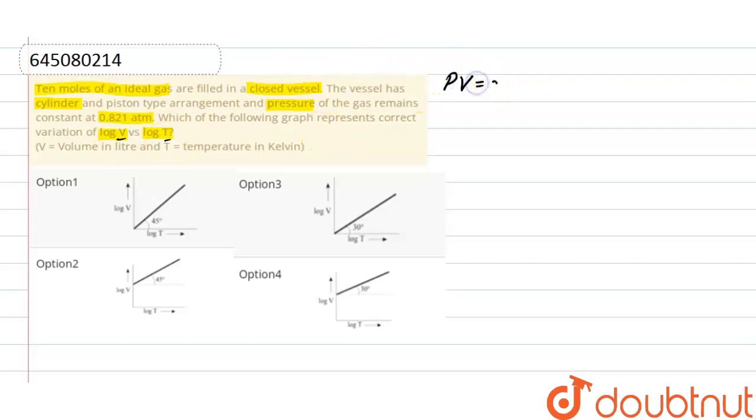According to ideal gas equation, PV equals nRT. We have to plot a graph between volume and temperature, so we can write V equals nR divided by P times T, where n is the number of moles, R is the gas constant, and P is the pressure.